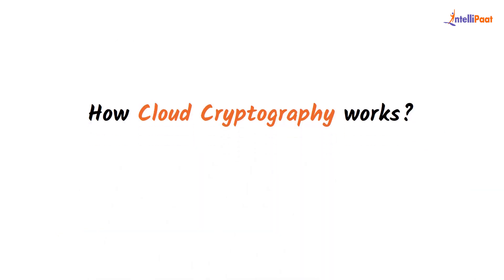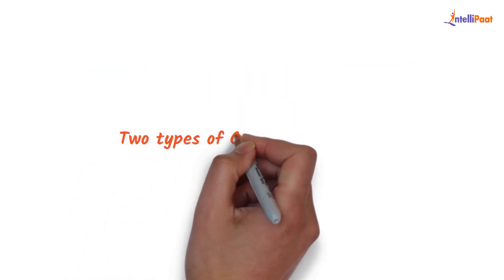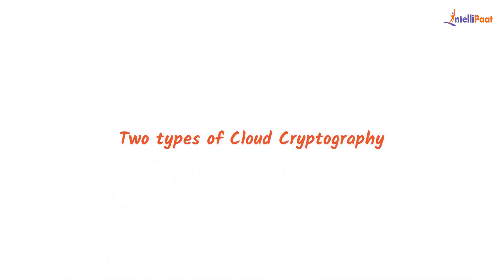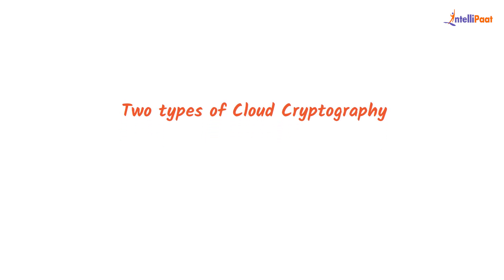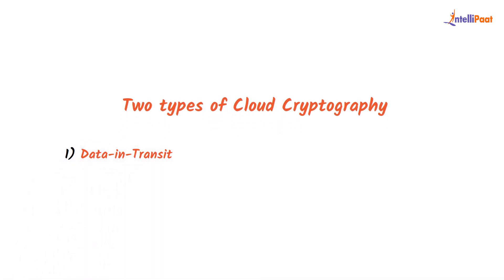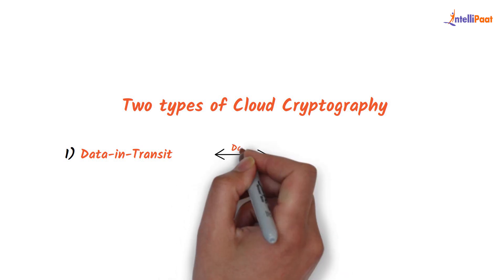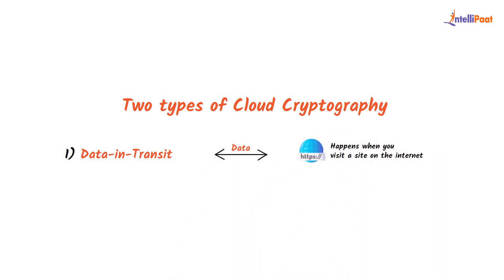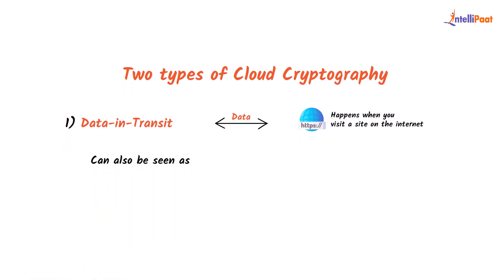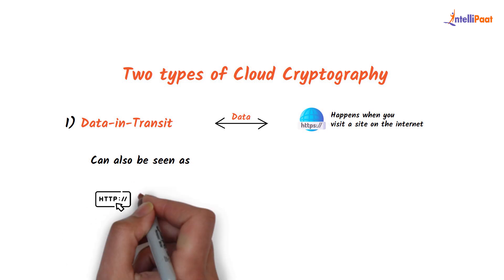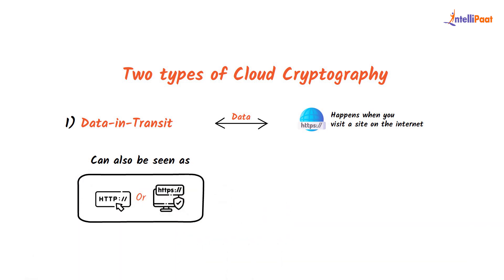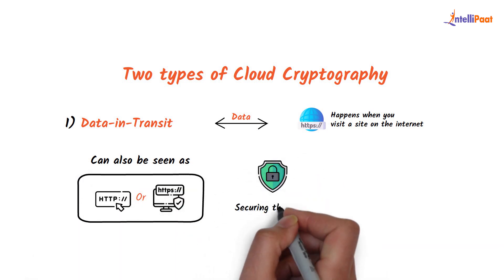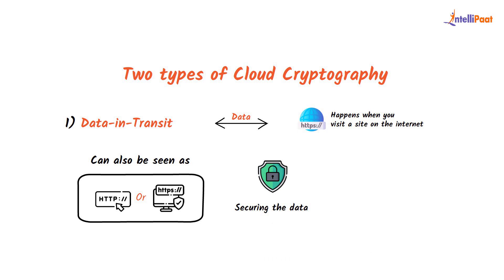Let's understand how cloud cryptography works. There are basically two essential types of cloud cryptography techniques which guide all of the encryption processing. The first one is data in transit. In this step, the data moves between the endpoints. Data in transit encryption happens when you visit a site on the internet, and it can be seen in web page addresses that start with either HTTP or HTTPS, which does the job of securing the data of that site by providing a layer of encryption around it.